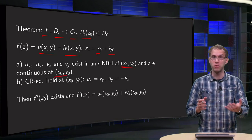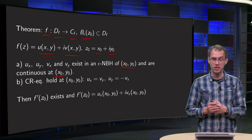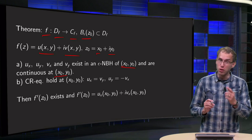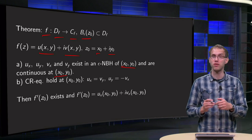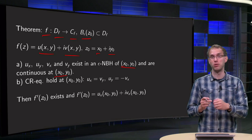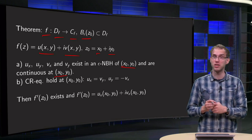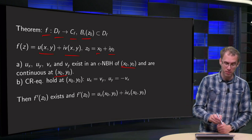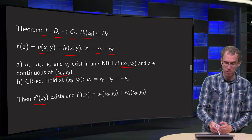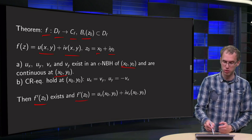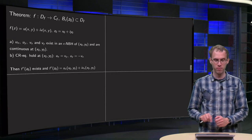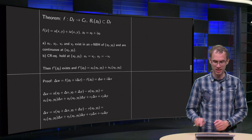We knew that already because it was a necessary condition. And then if those conditions are satisfied — both Cauchy-Riemann and also the continuity of ux, etc. — then f'(z0) exists, and f'(z0) equals ux plus i times vx.